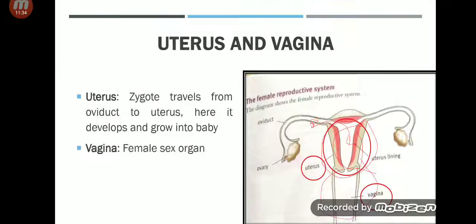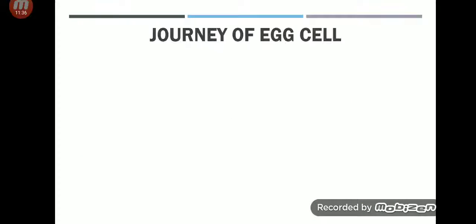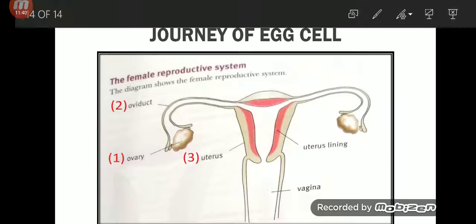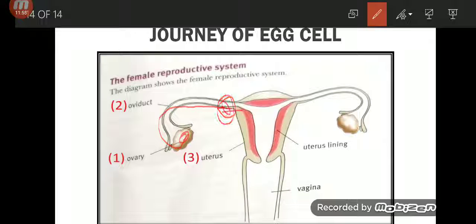Now we will see the journey of the egg cell. In this picture you can see: first, the egg cell develops in the ovary. It then travels into the oviduct, where fertilization will happen. Then the zygote is implanted in the uterus. This is the journey of the egg cell.